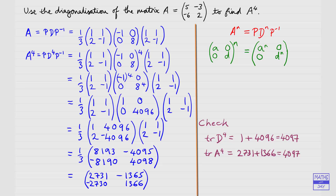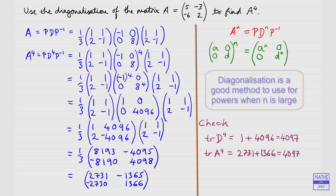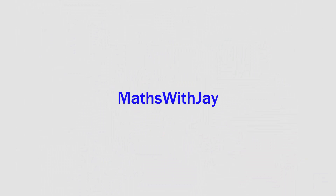This doesn't prove our answer is correct — there are many matrices with main diagonal entries summing to 4097 — but it makes it quite likely. Another way to check would be to multiply A by itself four times; the fastest approach would be to compute A² first, then square that to get A^4. This diagonalisation method works really well when you're raising a matrix to a very high power, whereas in this case with power 4 it's not much more work to just multiply the matrix by itself directly.